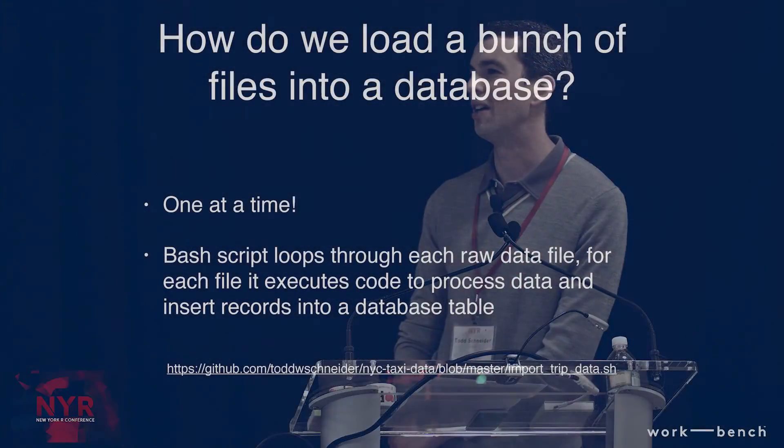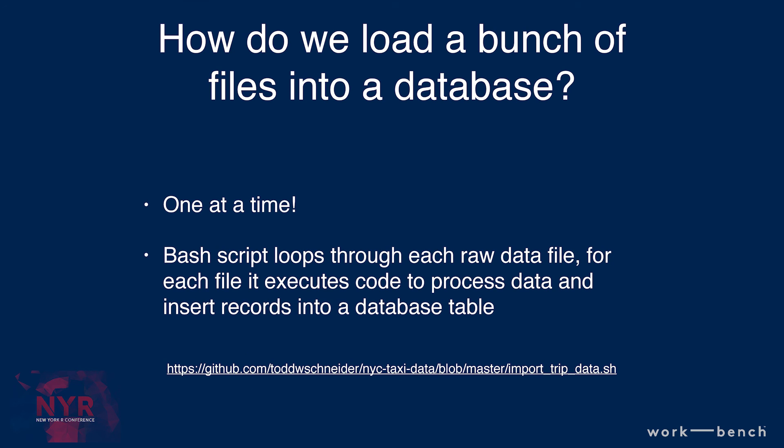Just a quick note on how to load all this stuff into the database. The taxi data is around 300 gigabytes, which sounds daunting, but you can just break it into chunks and do one file at a time. This is where command line tools come in handy — you can write a little bash script that just loops through each file. You can boil it down to making sure you can handle one file, then write a loop, and that's just time. Details are on GitHub.